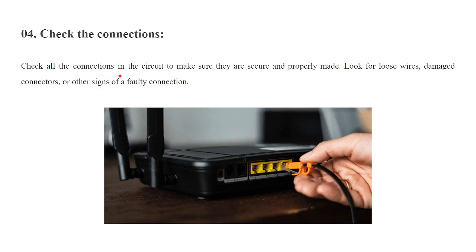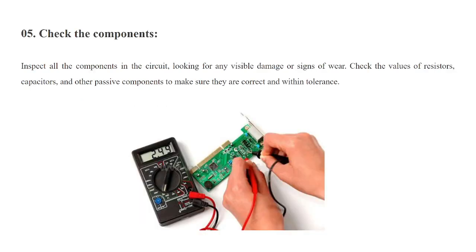The fifth step is to check the components. In this step, you have to check the component values — whether they are correct as specified in the datasheet or schematic. If there is a difference, replace that component. Inspect all components in the circuit, looking for any visible damage or signs of wear. Check the values of resistors, capacitors, and other passive components to make sure they are correct and within tolerance.